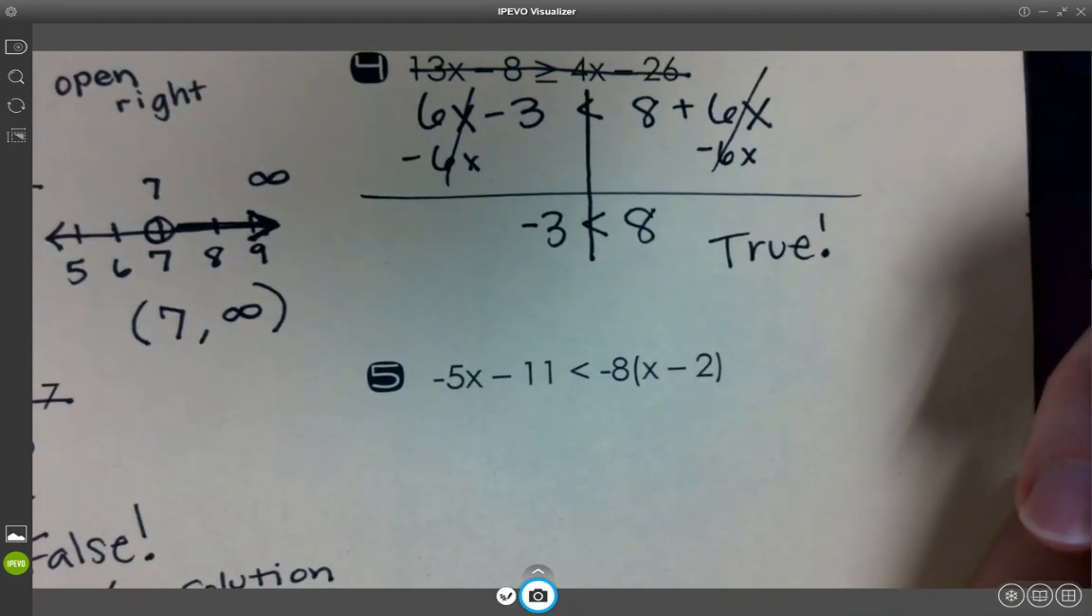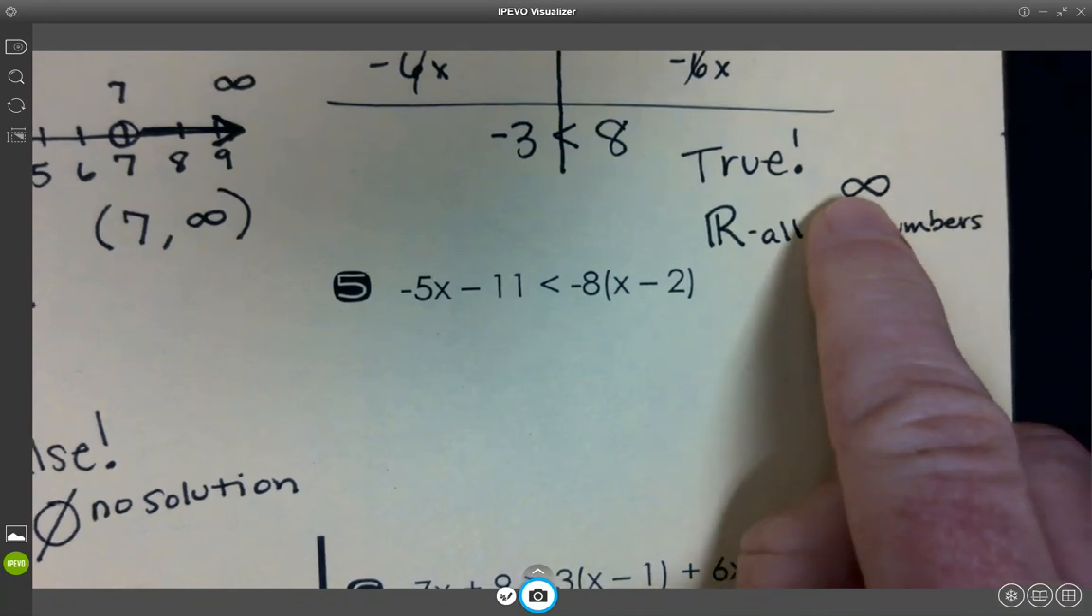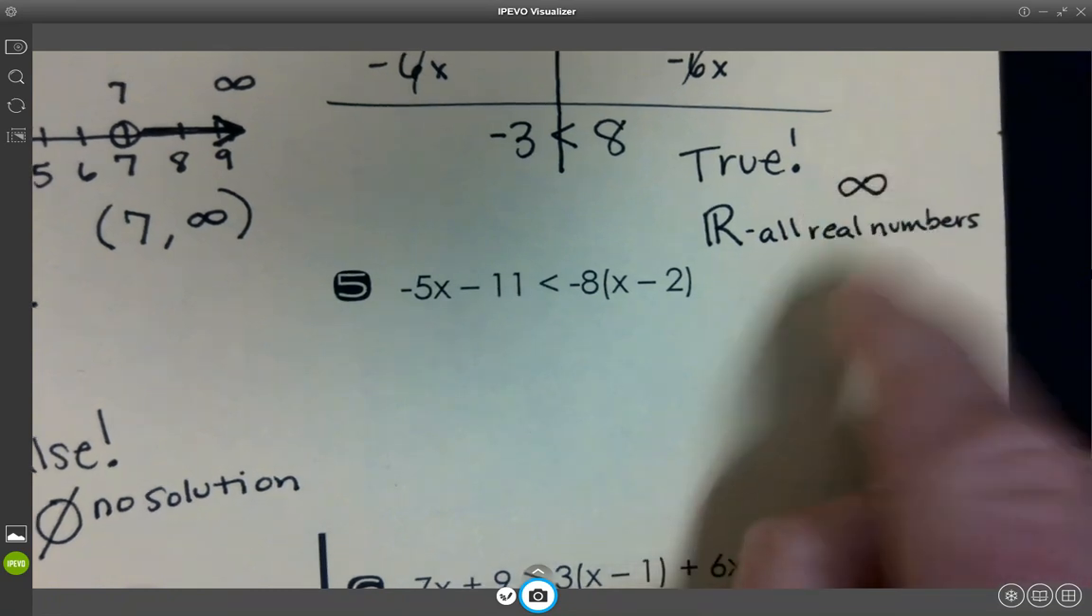What happens whenever it's a true statement? It's one of the special cases. When it's false, it's no solution. When it's true, infinity, or sometimes on your solutions, it'll be all real numbers. And what that one means is all real numbers. You could have either one as an answer choice. Infinite solutions or all real numbers. They mean the same thing.